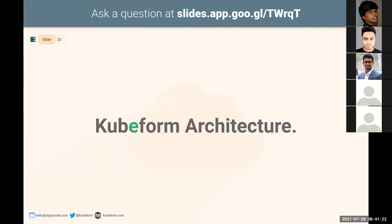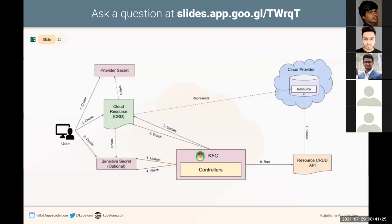Now let's talk about the architecture of Kubeform. This is the high-level architecture. First, a user needs to create a provider secret, which holds the access credentials of the cloud provider where the resource will be created. Then the user can create a sensitive secret with sensitive fields of the cloud resources. Creating a sensitive secret is optional — if a user does not create one, the Kubeform controller will create a sensitive secret for the user after creating the resource to store the resource's sensitive fields.